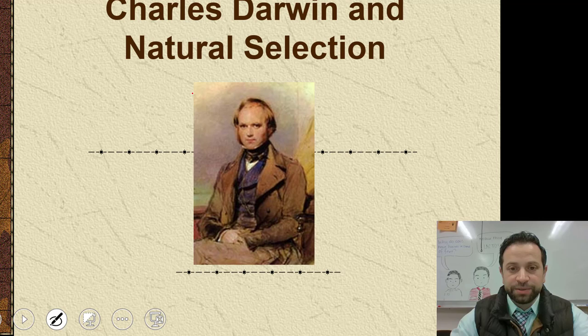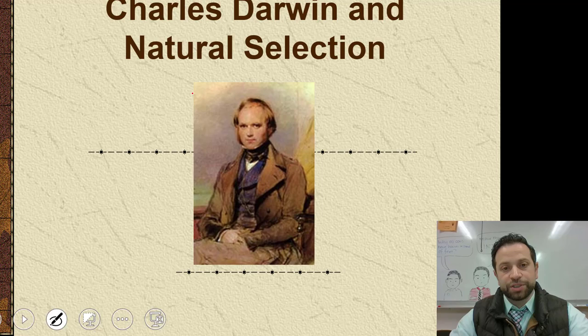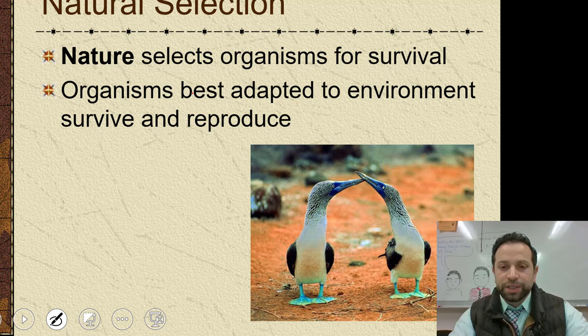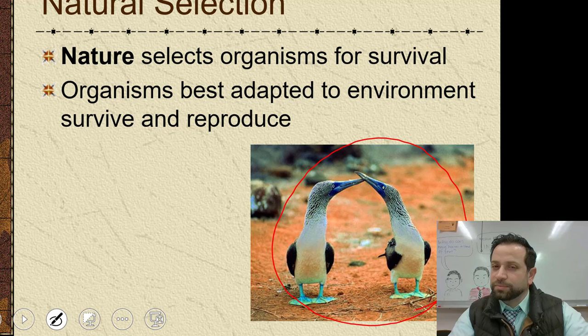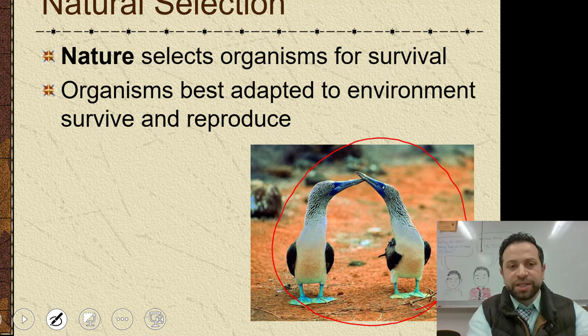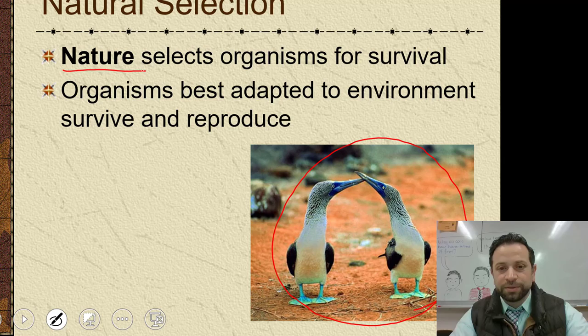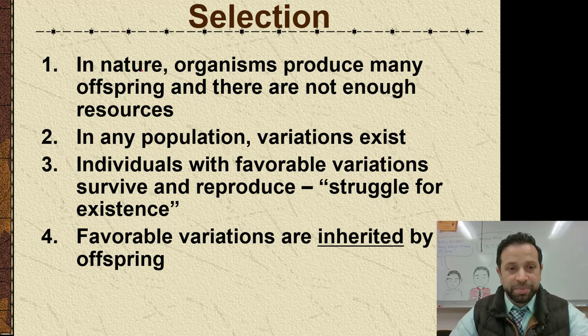Now here's Charles Darwin and his theory, which is what we call natural selection. Natural selection is about this: nature selects organisms for survival. The organisms that are best adapted to the environment survive and reproduce. Nature selects the organisms that are best adapted to that environment, whatever that environment might be.